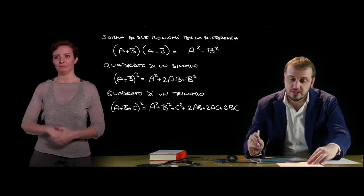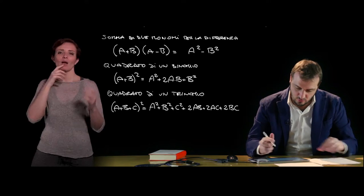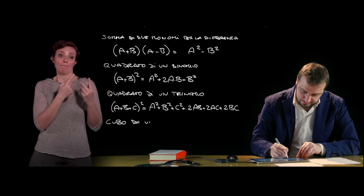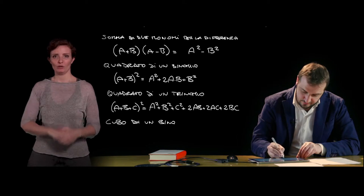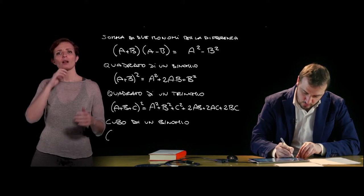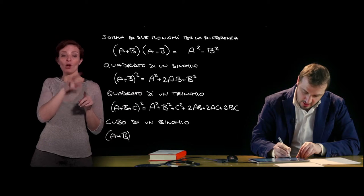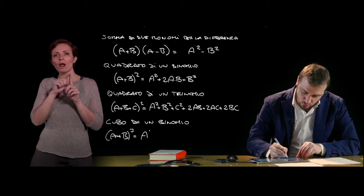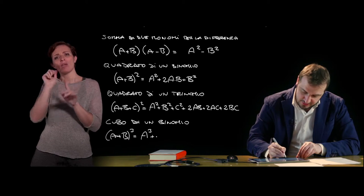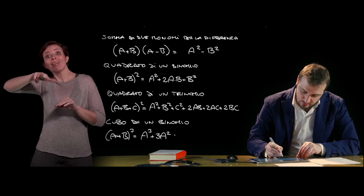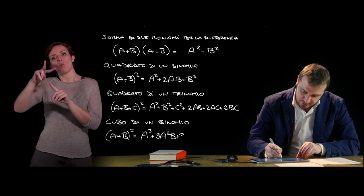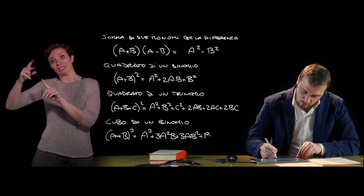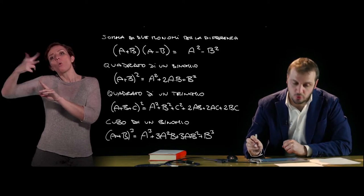Another notable product is the cube of a binomial. The cube of a binomial, (a + b)³, is equal to a quadrinomial characterized by the cube of the first monomial, plus three times the square of the first monomial times the second, plus three times the first times the square of the second, plus the cube of the second monomial.